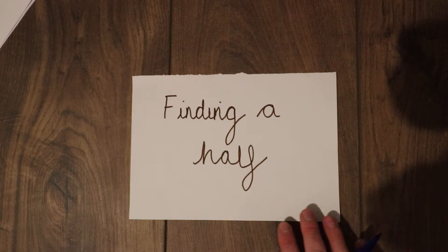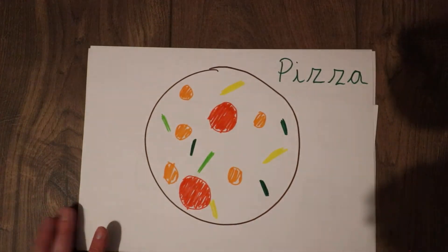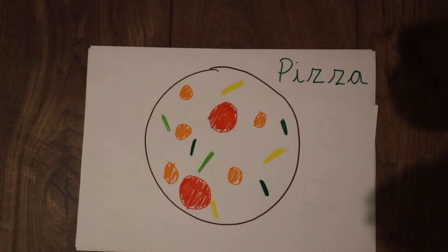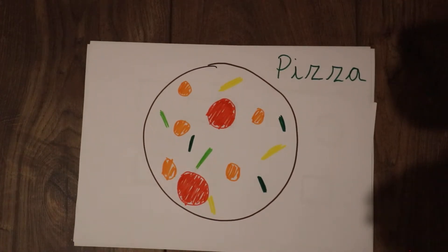Today we are going to be learning what half is. Now, my favourite way to teach half is by looking at pizzas. I was going to cook a pizza but then I thought that would be a waste. So, I've drawn a pizza. It's not the best drawing but you get the pizza.